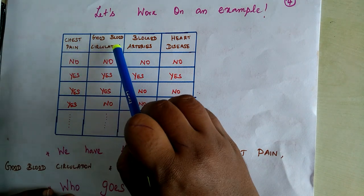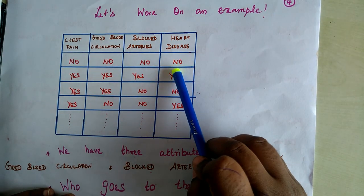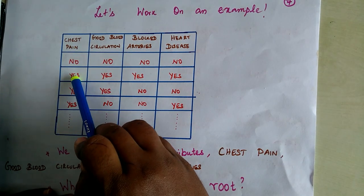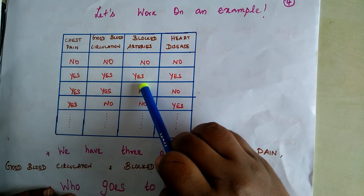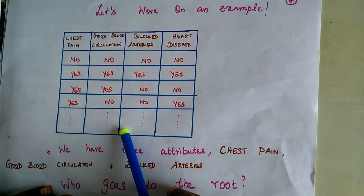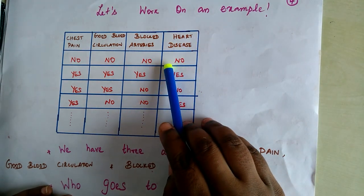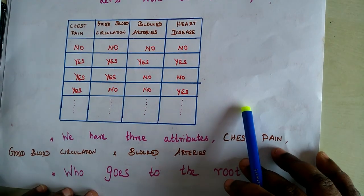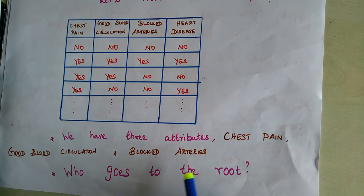We are given three attributes: chest pain, good blood circulation, and blocked arteries. According to the training data, a patient without chest pain, without good blood circulation, and without blocked arteries will not have heart disease. A patient with chest pain, good blood circulation, and blocked arteries is supposed to have heart disease. Using this training data, we need to build a decision tree.